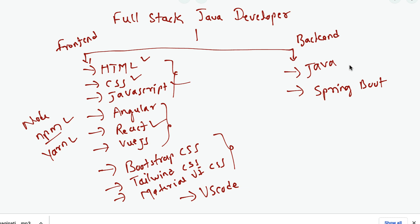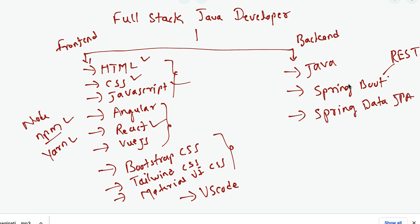Once you learn Java, next learn Spring Boot. Spring Boot is a very popular Java framework used to develop RESTful web services as well as microservices. In full stack application development we use Spring Boot to develop and expose REST APIs. Next you need to learn Spring Data JPA, which we use to develop the repository layer or DAO layer in a Spring-based application. Spring Data JPA internally uses Hibernate as the JPA provider by default.